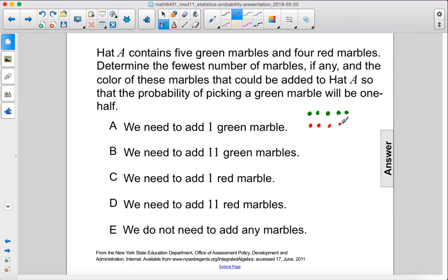That means the current probability of picking a green marble is 5 out of 9, because 9 is the total amount of marbles, 5 are the favorable outcome, which is picking a green marble.